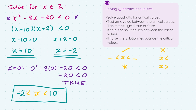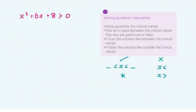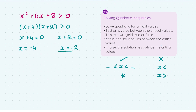Let's take a look at a question where the solution works out to be false. I'm going to fire away with the same steps for this question, where x² + 6x + 8 > 0. Let's find our critical values. My two critical values are x = -4 and x = -2. Next up, we've got to do the test, so I'm going to pick an x value between -4 and -2, and I'm going to select x = -3, and sub that into the original question.